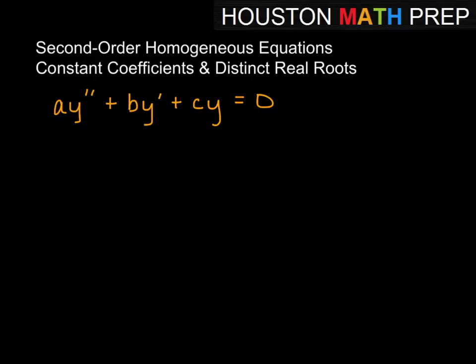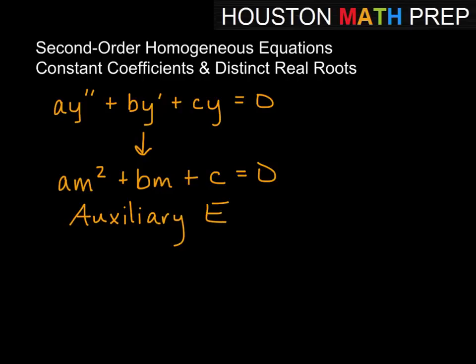And we want to remember that we're actually going to be solving this equation am² + bm + c = 0. And this is what we call our auxiliary equation. Some people call it the characteristic equation, but we're going to call it the auxiliary equation.